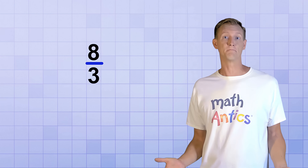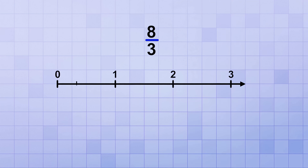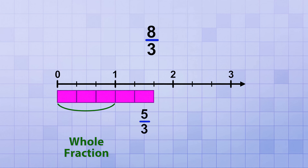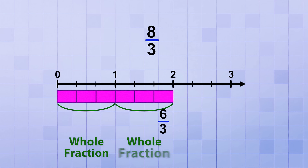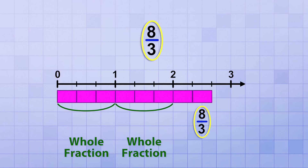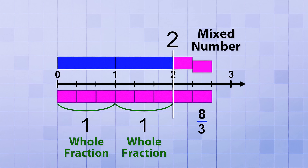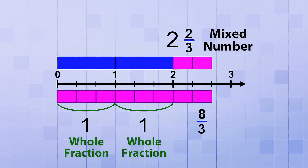Let's look at another improper fraction: 8 over 3, or 8 thirds. We'll use the same number line from 0 to 3, but this time let's subdivide each whole number into 3 parts to make counting thirds easier. So we have 1 third, 2 thirds, 3 thirds — there's a whole fraction already! Continuing: 4 thirds, 5 thirds, 6 thirds — another group of 3 thirds, another whole fraction. Then 7 thirds and 8 thirds. As we noted, 8 thirds contains 2 whole fractions, each simplifying to 1, giving us 2 as the whole number part. The leftover fraction is 2 thirds. So the improper fraction 8 thirds is equivalent to the mixed number 2 and 2 thirds.